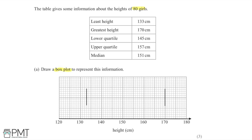I draw the center box using the lower quartile at 145 centimeters and the median at 151 centimeters. It's important to remember that the median doesn't need to be halfway between the lower and upper quartiles. The upper quartile is at 157 centimeters. These three center lines are joined together to form the box, and then I attach the two tails to this box, showing the full range of the data.